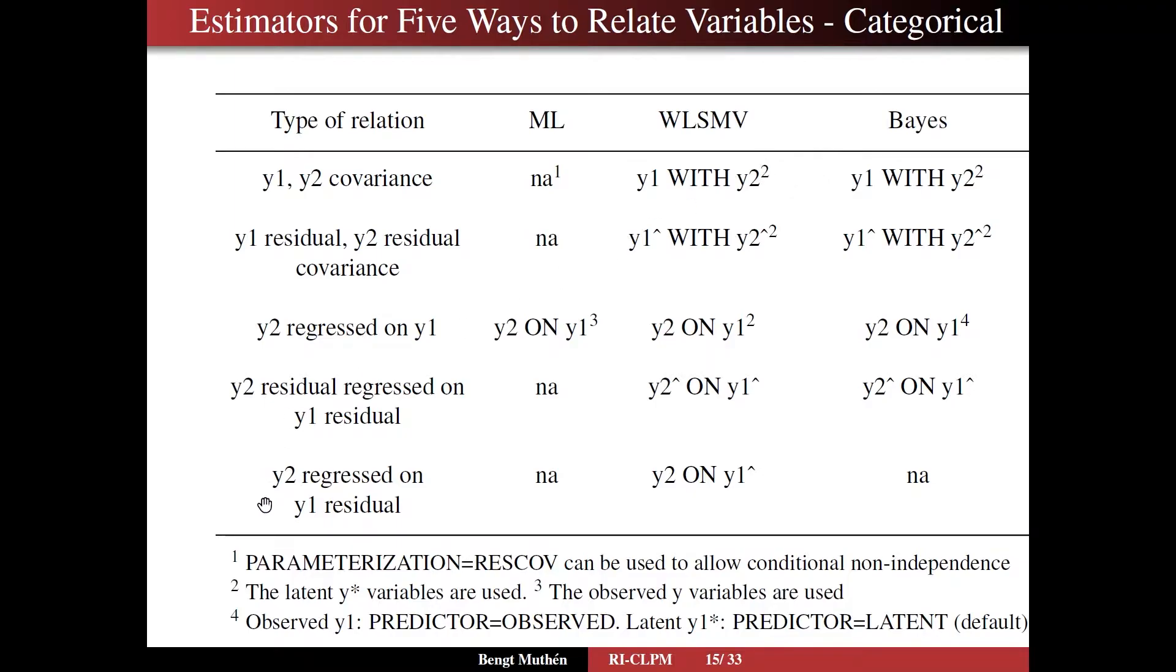And footnote two says that here, the latent y-star variables are used. So it's not for the observed categorical variables, but for the continuous latent response variables, y-star, which is a natural way of describing association in the categorical case, both the binary and the ordinal case.